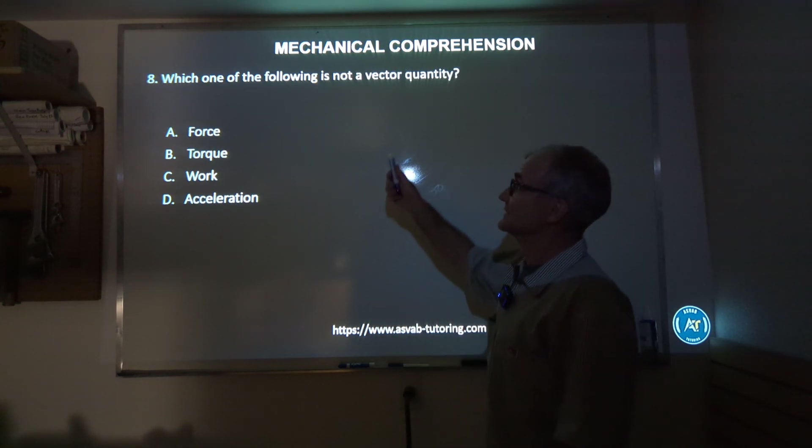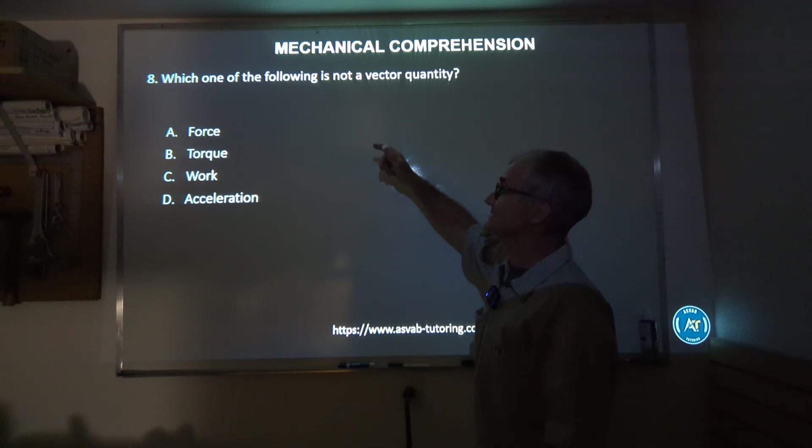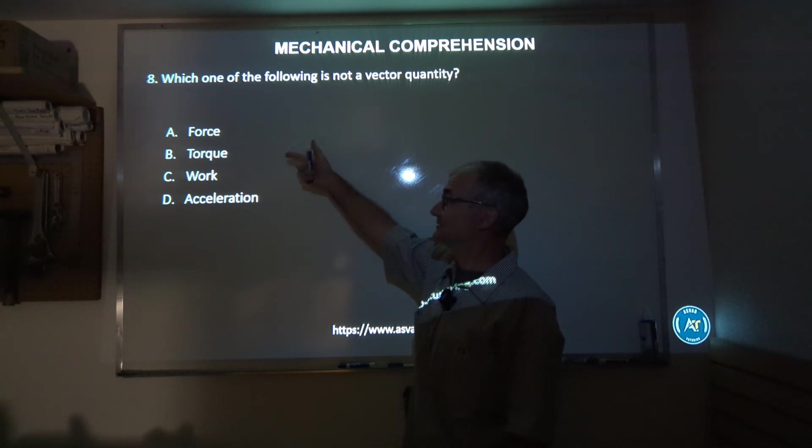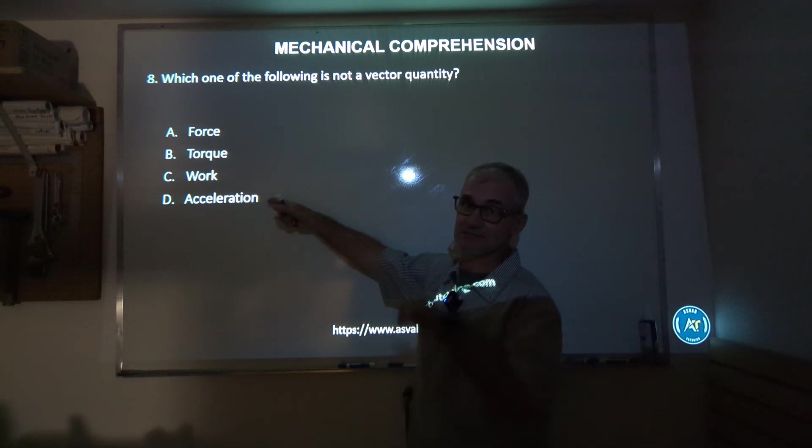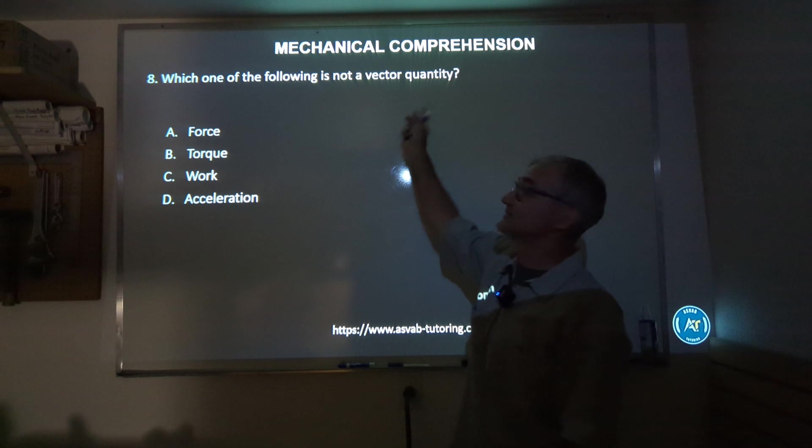Number eight: which one of the following is not a vector quantity? So vectors, we just talked about those a second ago, both magnitude and direction. So we're looking for something that is not a vector quantity. Force is measured as a vector. Torque is the same as force, it's just a turning force. Work, that's not really related to it. And acceleration is also a vector measured with vectors. So correct answer is C, work is not a vector quantity.